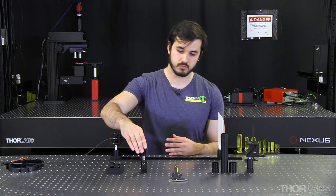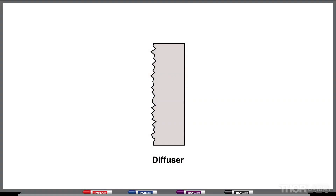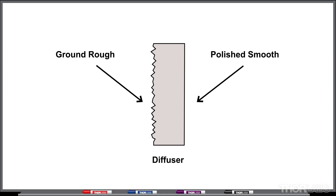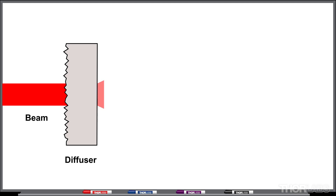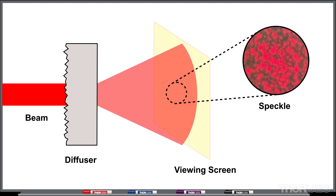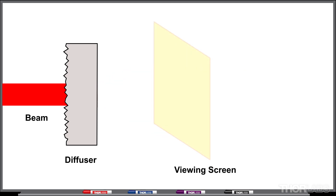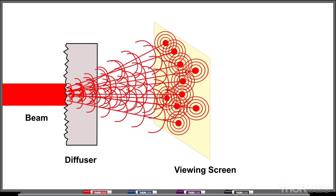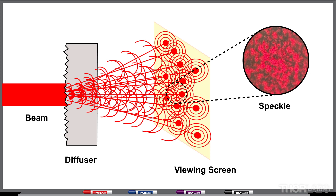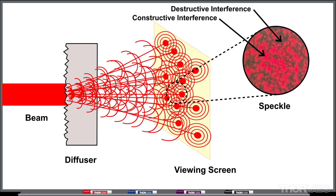Another approach is to use a diffuser. If I place the diffuser in the beam path, we will see a speckle pattern created on the screen. The speckle pattern is the result of coherent light scattering from the diffuser. The bright spots are the result of constructive interference while the dark areas are from destructive interference.